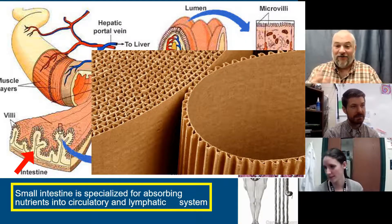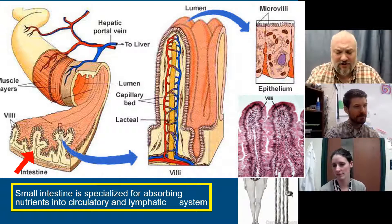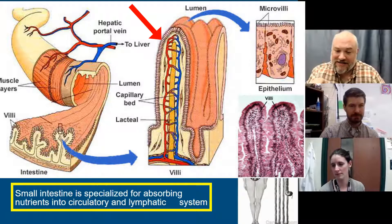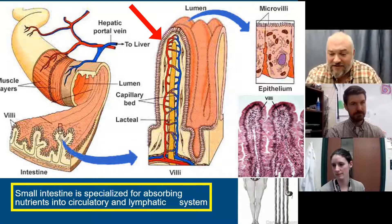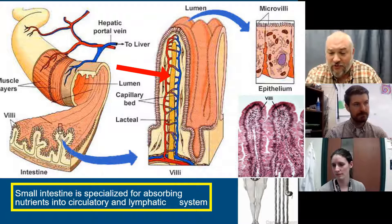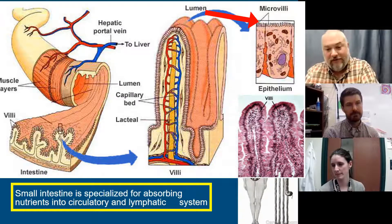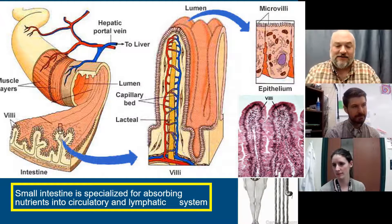Those corrugations increase the surface area — the surface area is at least three times greater because of them. Then on each of those corrugations you see these little finger-like things called villi, and those villi are full of capillaries and lymph vessels to absorb the nutrients. They're really close to the surface. Then on each villus there are even smaller things at the subcellular level called microvilli. We just keep adding surface area on top of surface area in the small intestine.